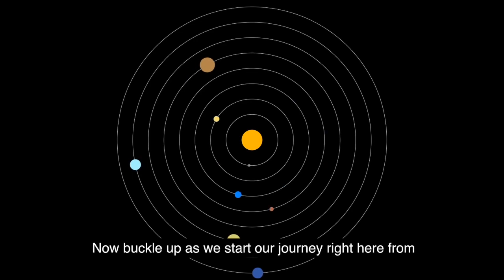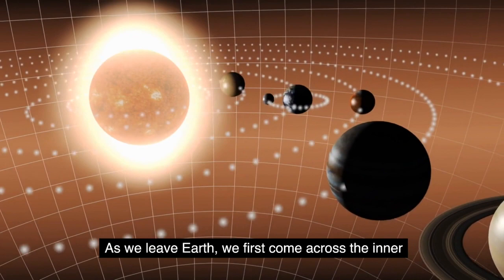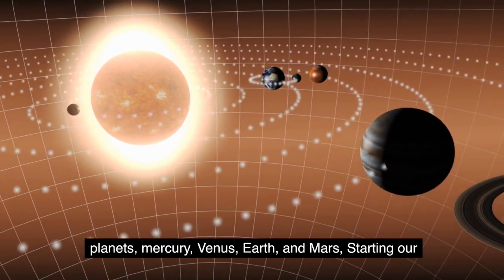Now buckle up as we start our journey right here from our home planet Earth. As we leave Earth, we first come across the inner planets: Mercury, Venus, Earth, and Mars.